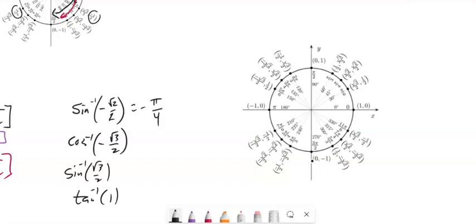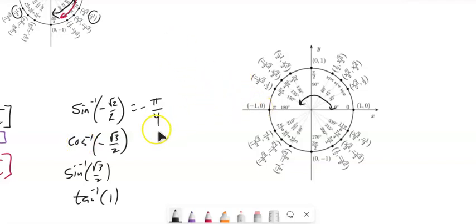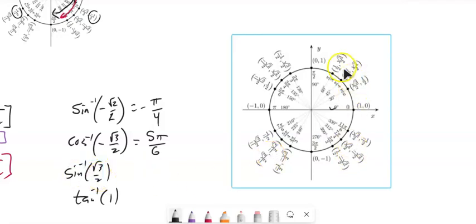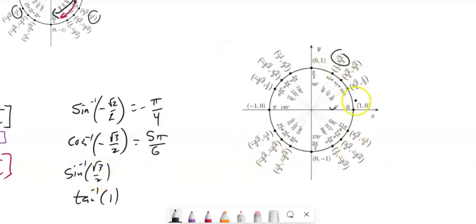Inverse cosine of negative √3/2: inverse cosine uses x-values and runs from 1 to negative 1. We want negative √3/2, so that's at 5π/6. Inverse sine of √3/2: that's a y-value, it's here, so the answer is π/3.